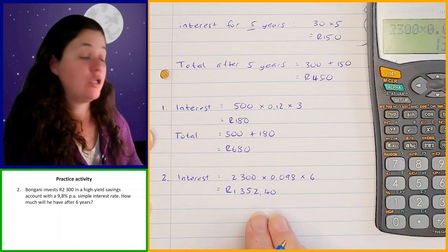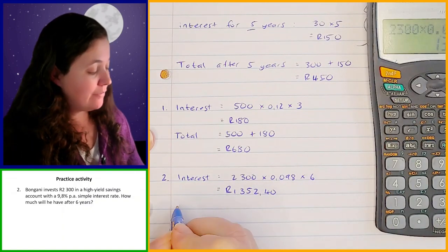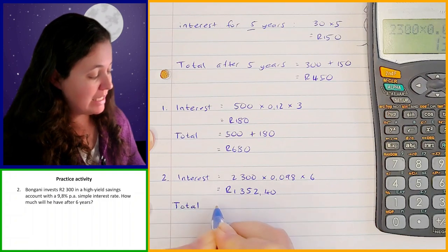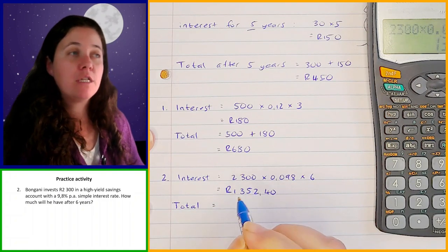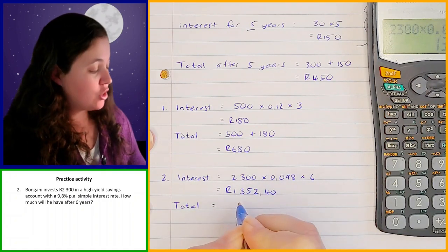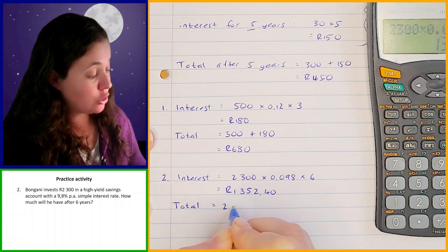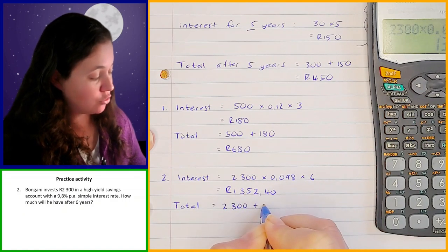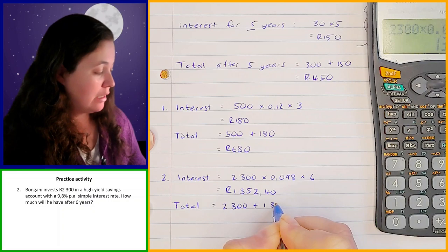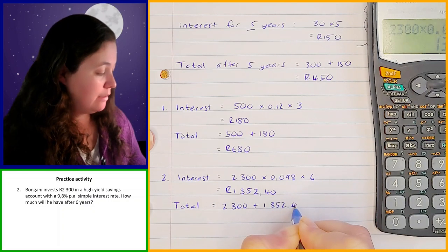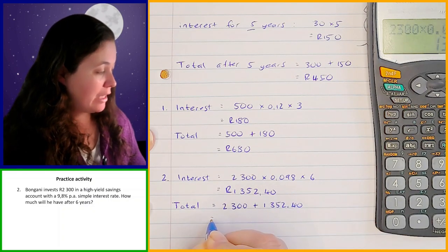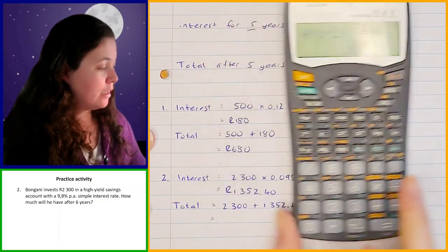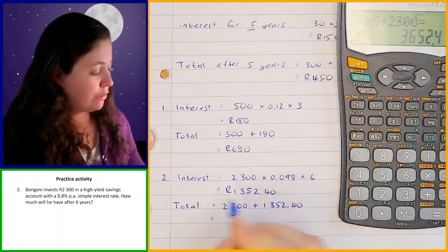That's the total amount of interest that he is going to earn. Now let's find out what his total investment will be worth after six years. We take the starting amount of 2,300 and add the interest of 1,352 rand 40, and that gives you 3,652 rand 40. That's how much money he will have after six years.